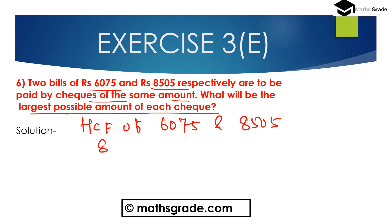We have to find out the highest common factor of 6075 and 8505 using the continued division method.